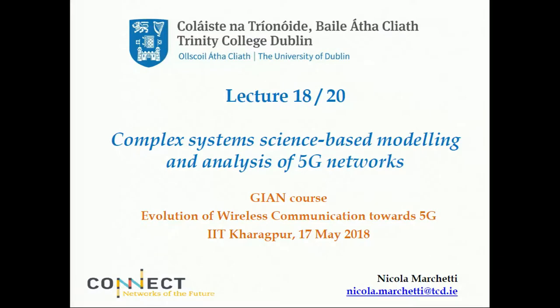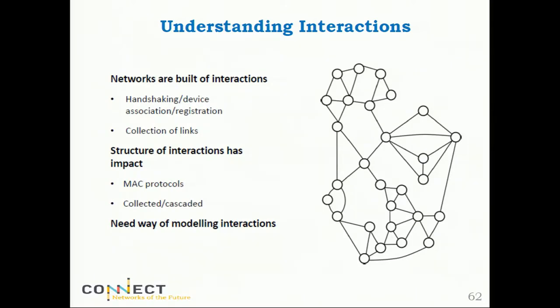In this last lecture, we are going to see how we could apply some tools from complex system science to analyze concrete problems in 5G, or in general how we can model modern networks using understanding that comes from complex systems. Networks, as we define them, are pretty much graphs where different nodes — transmitters, receivers, and various entities — interact.